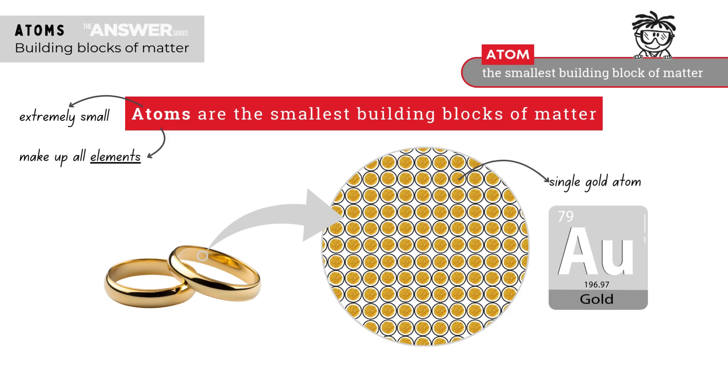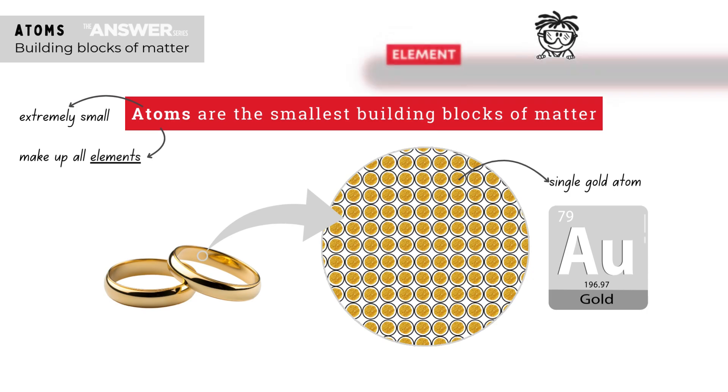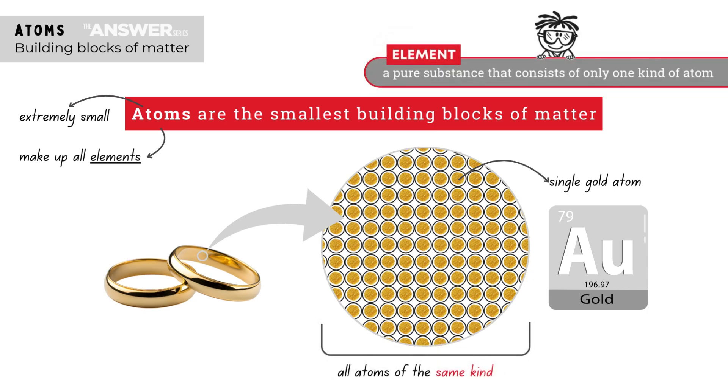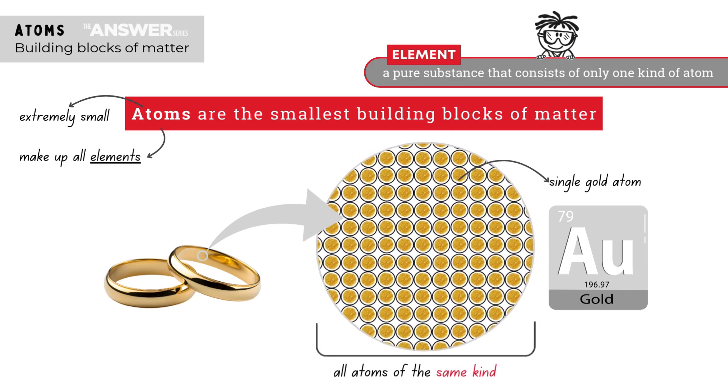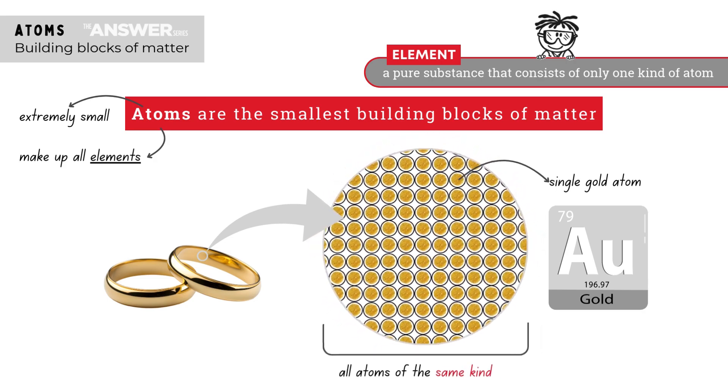One golden circle in this diagram represents a single gold atom. Note that no other atoms are present and all we see are rows upon rows of the same gold atoms. So elements like gold consist of thousands of atoms of the same kind.